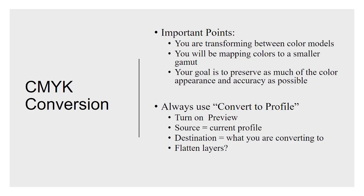Converting from a large gamut like Profoto RGB down to newsprint, for example, means that really bright, vibrant, saturated green grass you photographed is going to turn out in a newspaper print looking like just a blob of light green. There's not going to be a whole lot of detail or differences between the subtle shades of green in every blade of grass like you'd see on your monitor. Transformation between color models is destructive — you're going to be throwing away color.